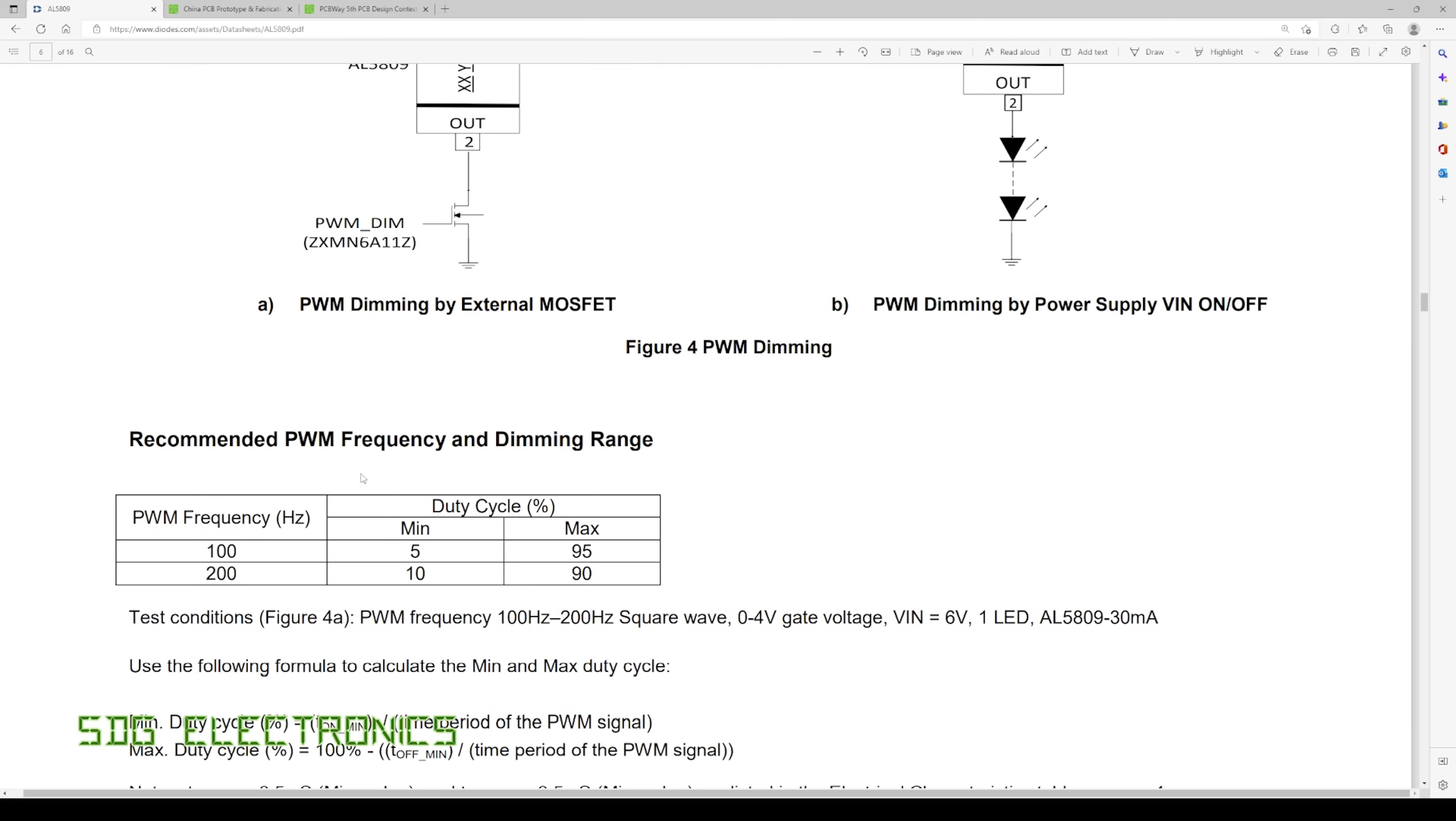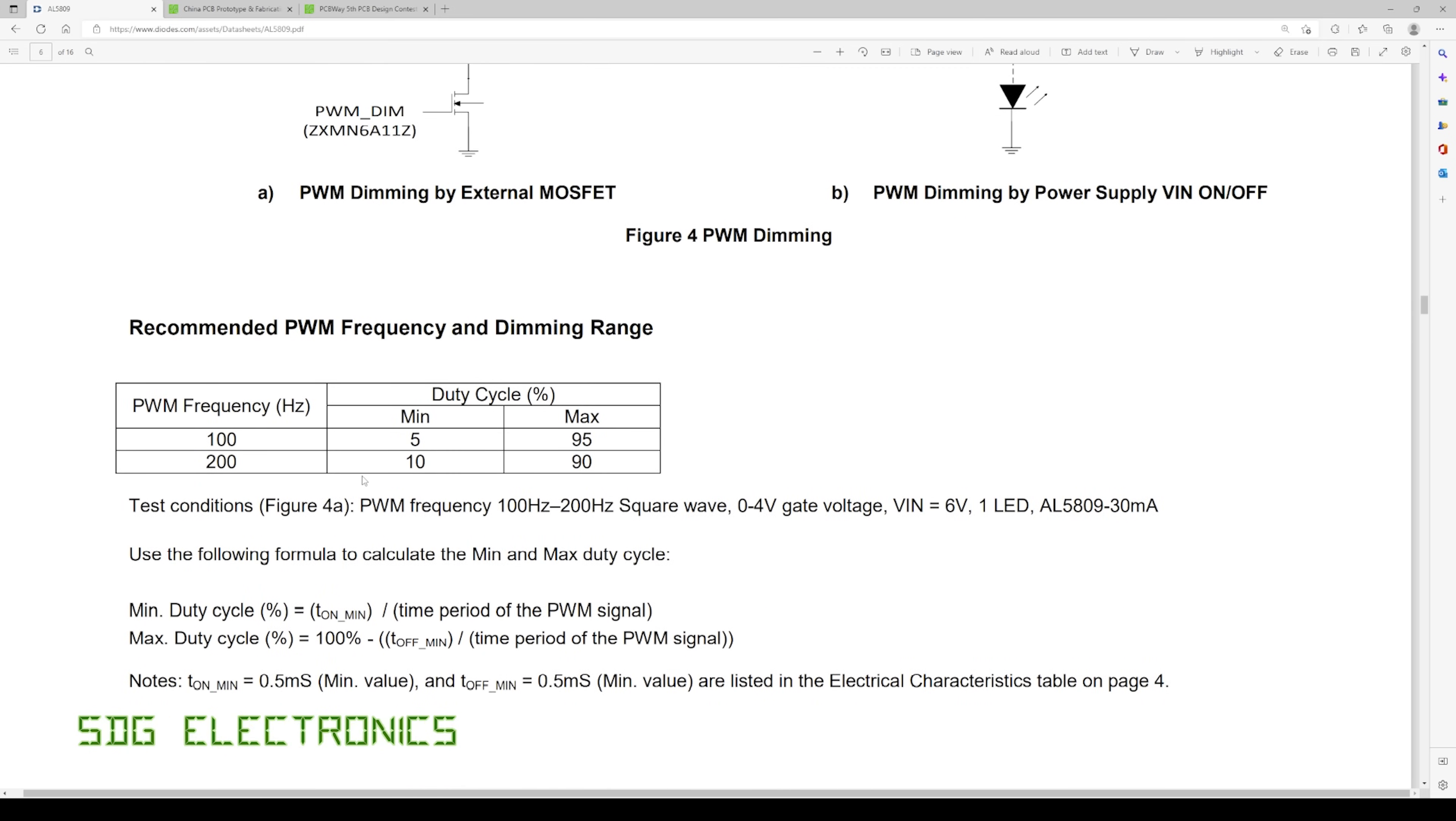So we should be quite safe during testing but if you look at their recommended frequency and dimming range at 100 hertz they recommend only from 5 to 95 percent and at 200 hertz from 10 to 90 percent which is quite high on the low side